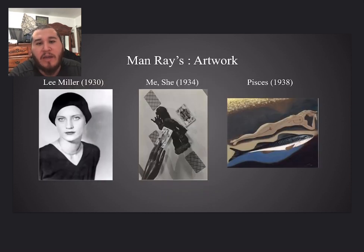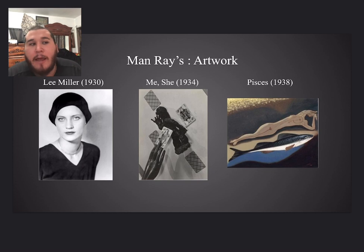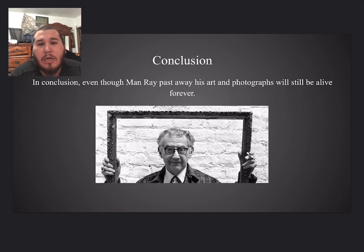More of Man Ray's artwork: Lee Miller 1930, Meret Oppenheim 1934, and In Peace 1938. My favorite is Lee Miller 1930 because she looks really great — I love how she looks so serious.